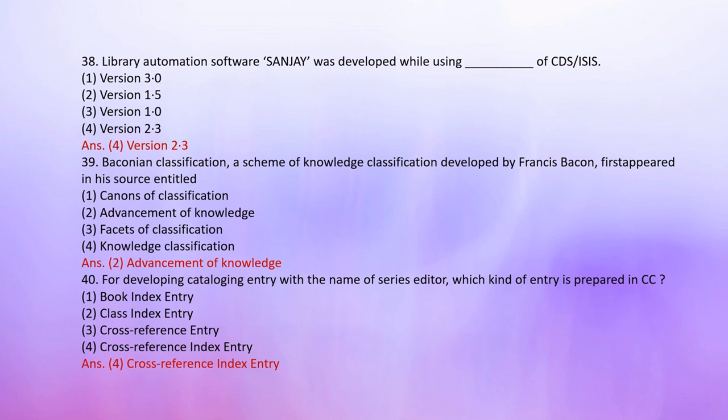Number 39: Baconian classification — a scheme of knowledge classification developed by Francis Bacon — first appeared in his work entitled: 1. Canon of Classification, 2. Advancement of Knowledge, 3. Facets of Classification, 4. Knowledge Classification. The correct answer is 2: Advancement of Knowledge.